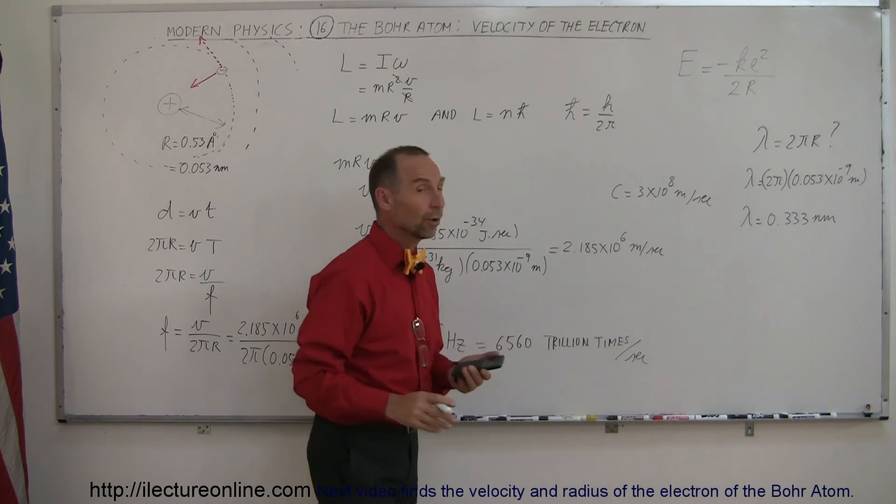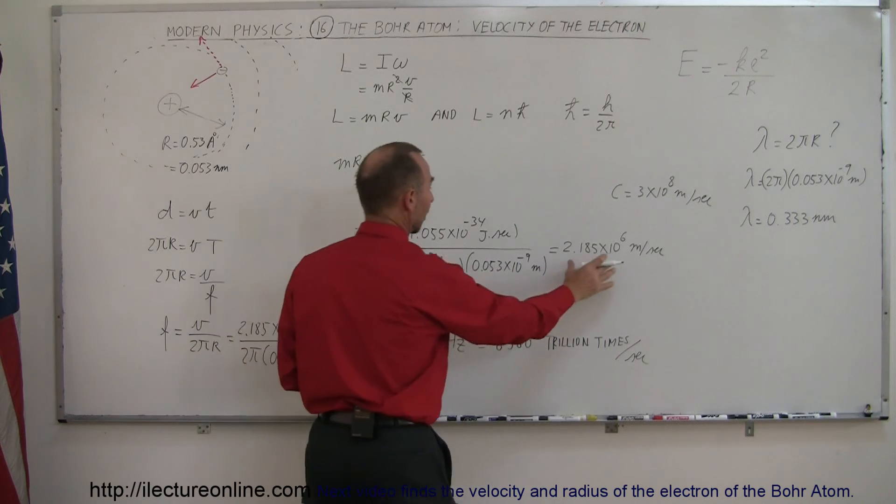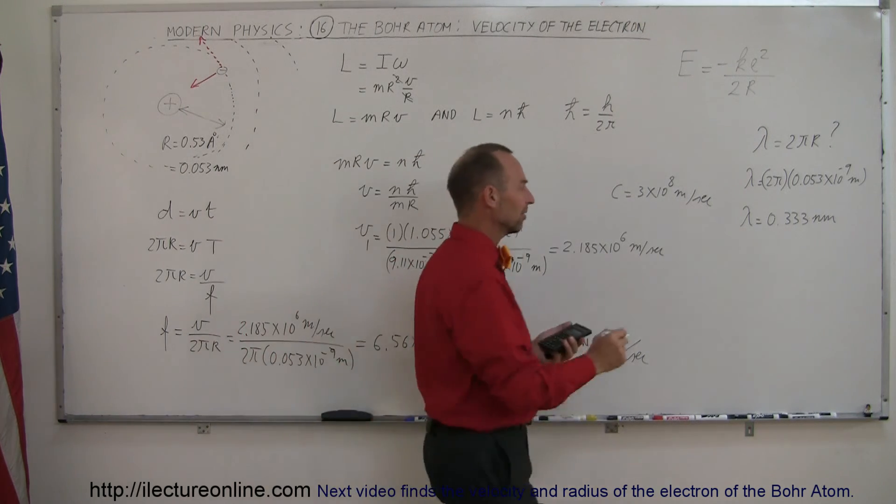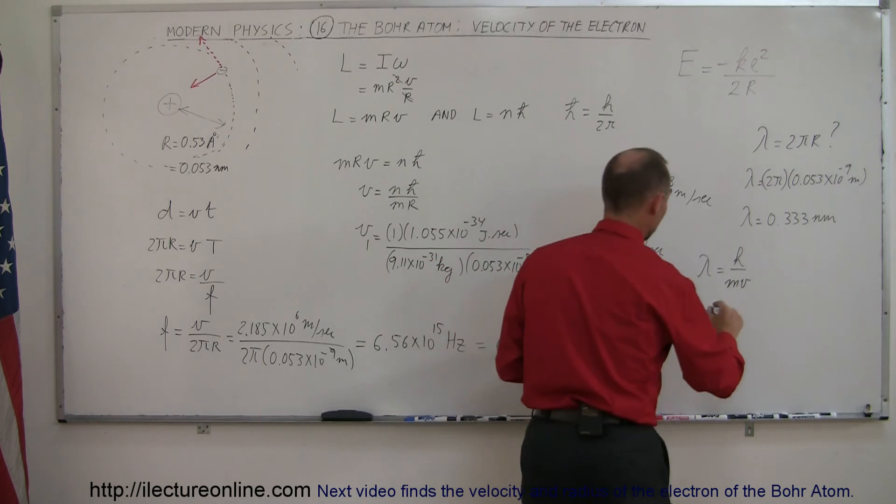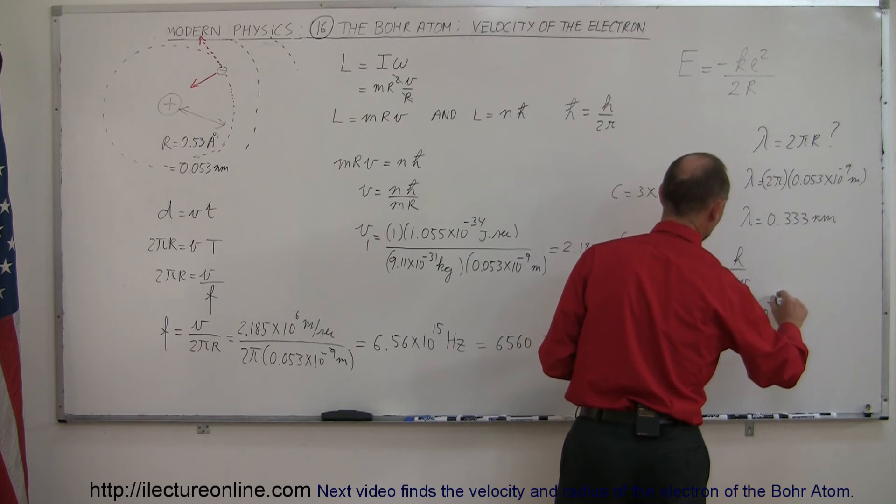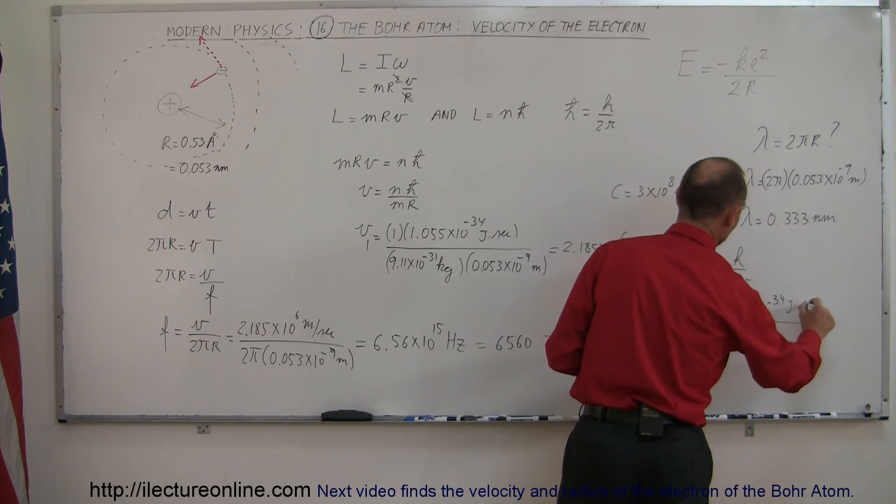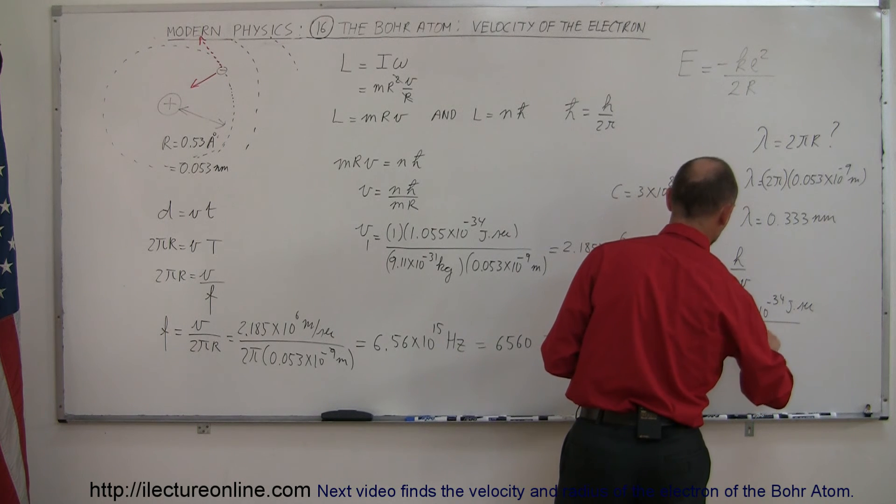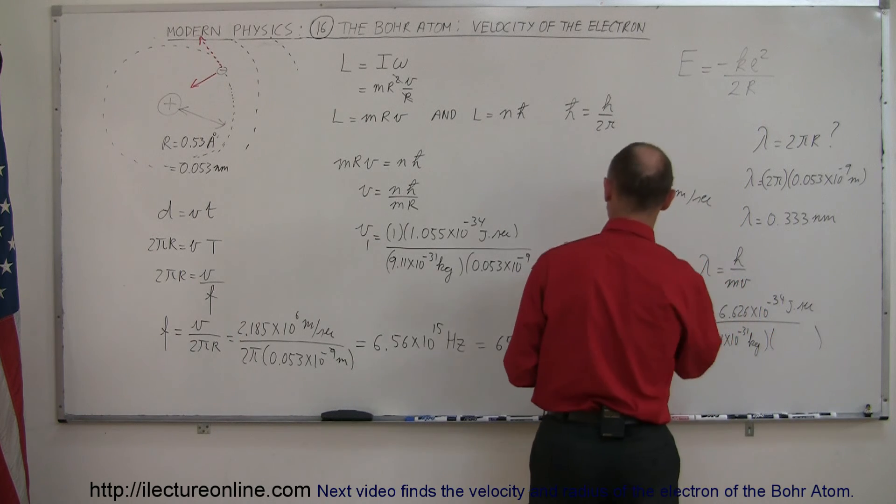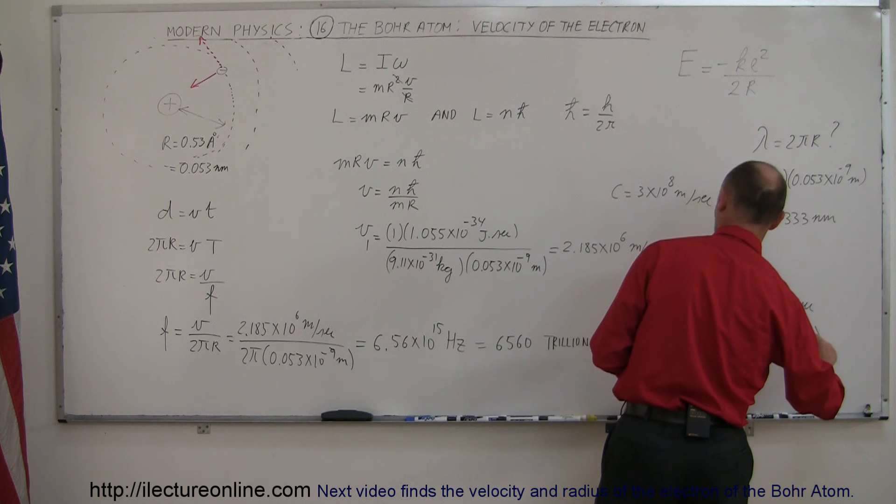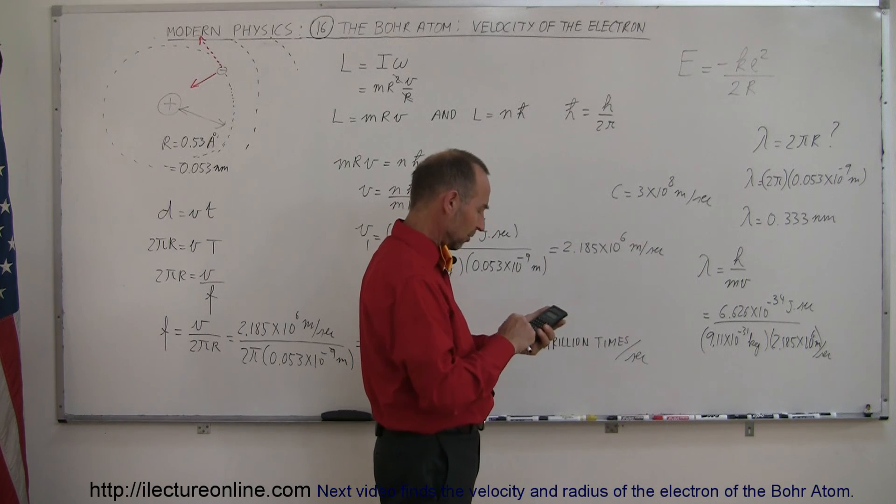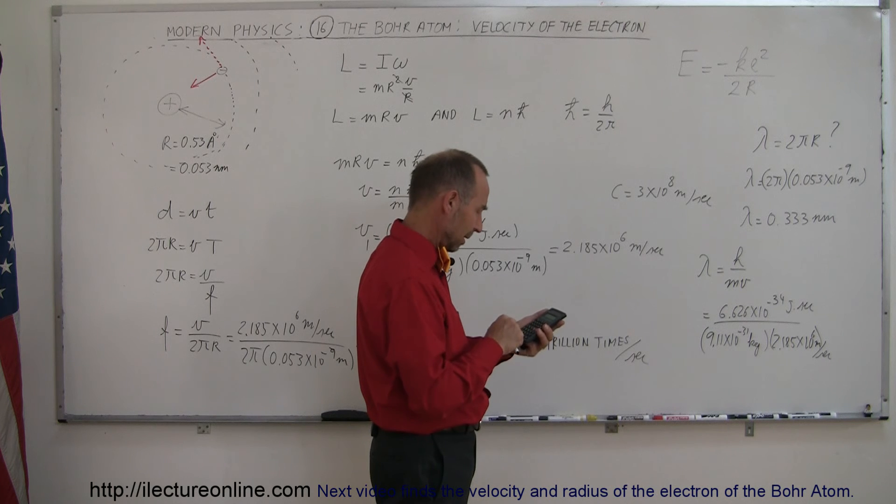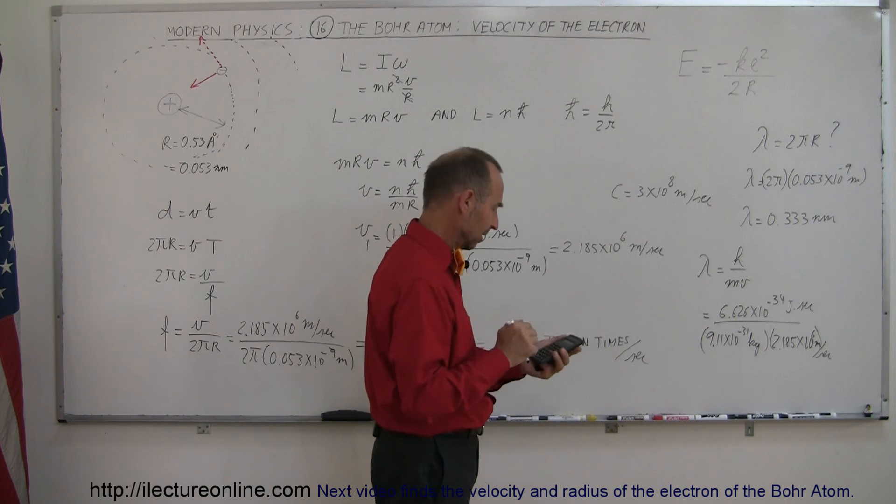All right, that's the assumption. Now there's another way in which we can check that. Since we know the velocity of the electron, we can go back to the de Broglie wavelength. We can say that the wavelength is equal to h divided by mv. And we should get the same result if we do that. Let's see if that's true. So this is equal to 6.626 times 10 to the minus 34, joules times seconds, divided by the mass, 9.11 times 10 to the minus 31 kilograms, and then times the velocity, which we found to be 2.185 times 10 to the sixth meters per second. And let's see if that gives us the same result. So 6.626e-34 divided by 9.11e-31, and divided by 2.185e6 equals, and how about that, lambda is equal to 0.333 nanometers.